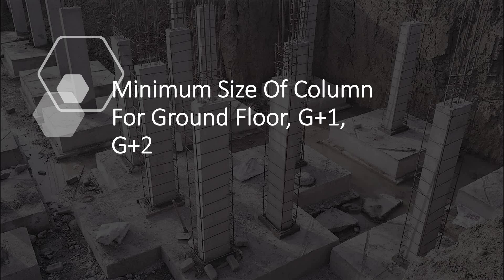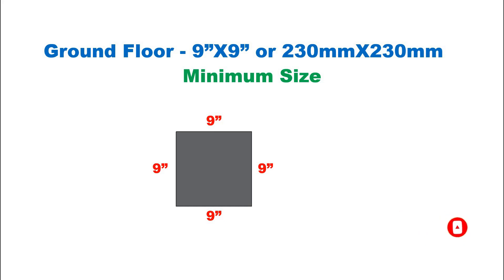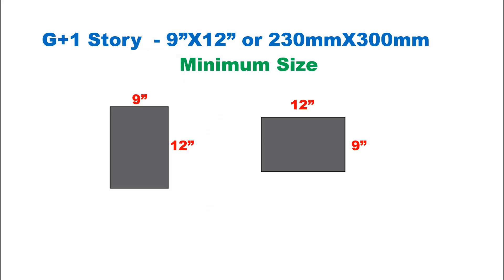Next we will see the minimum size of column for ground floor, G plus 1, and G plus 2 storey house construction in residential buildings. For ground floor, the minimum size to be used is 9 inch by 9 inch, that is 230 mm by 230 mm. For G plus 1, that is two storey house construction, the minimum size of the column should be 9 inch by 12 inch.